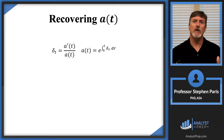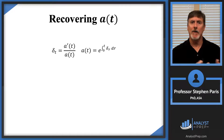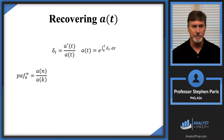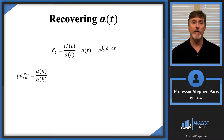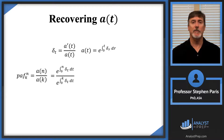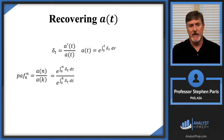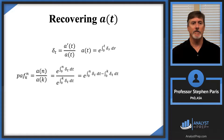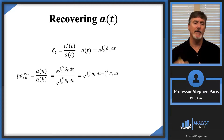The next thing I want to talk about is accumulating and discounting money from one time value to another. Let's look at the periodic accumulation factor from time K to time N. This is the ratio of a(N) to a(K). I'll use the exponential expression for a(t), plugging in N as the upper limit of integration in the numerator and K in the denominator. I've got a ratio of exponentials with the same base e, so I can write it as a single exponential by subtracting the exponent in the denominator from the exponent in the numerator.